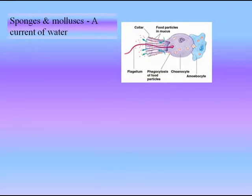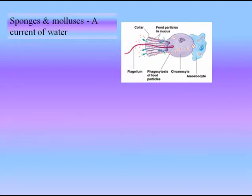Sponges do not have separate digestive, respiratory, and excretory systems. Instead, the water flow system supports all these functions including nourishment. They filter food particles out of the water flowing through them. Particles from 0.5 µm to 50 µm are trapped in the ostia, which is the opening that tapers from the outer to the inner ends. You can see the picture of a sponge here — there is a flagella, water flows through it, and food particles are trapped.